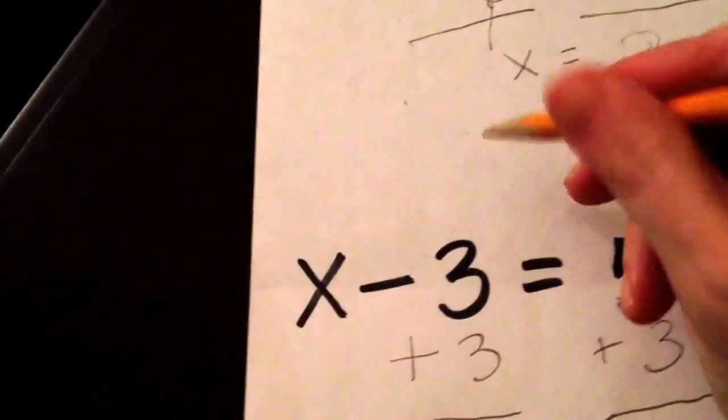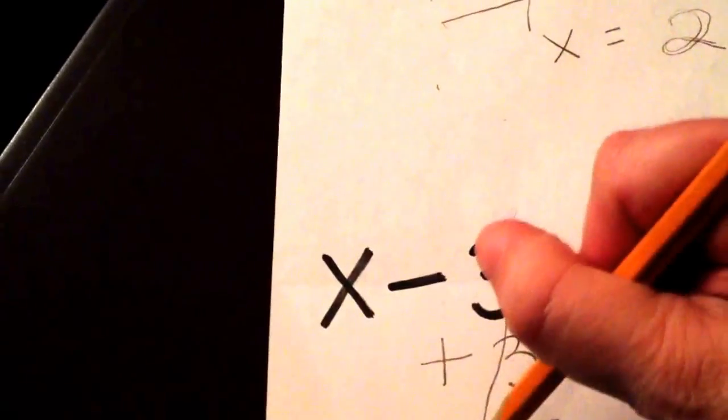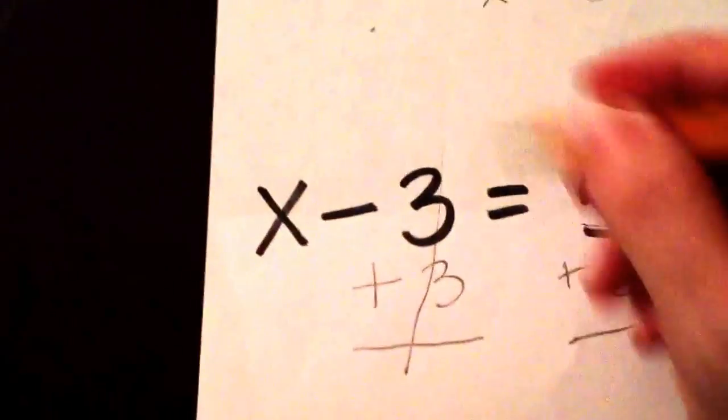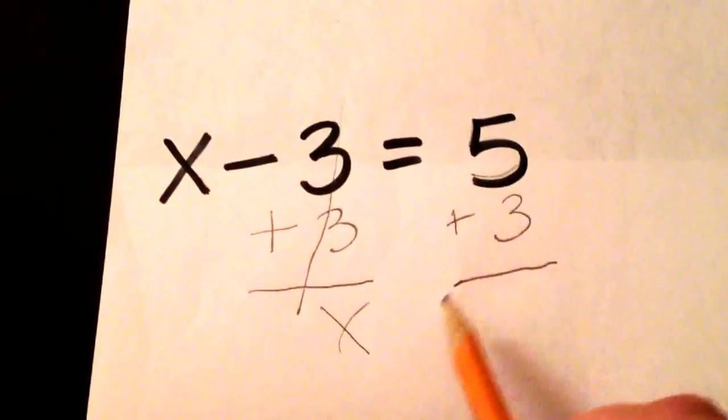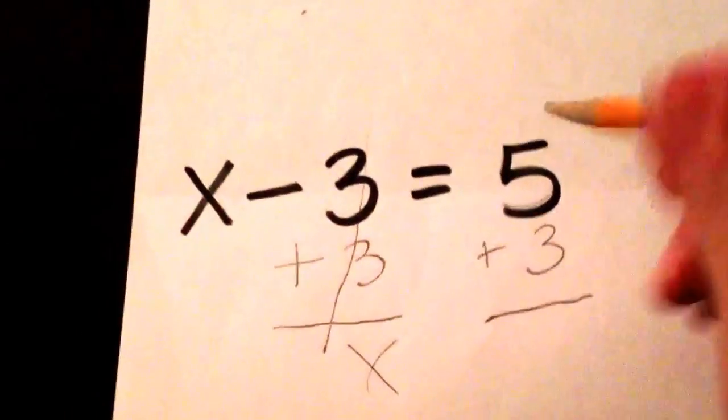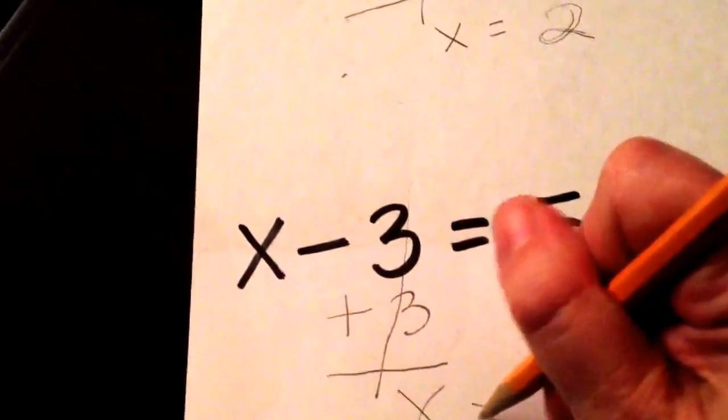The minus 3 plus 3 cancels out. So this would just be x remaining on this side. And on the right-hand side, 5 plus 3 equals 8. So x is equal to 8.